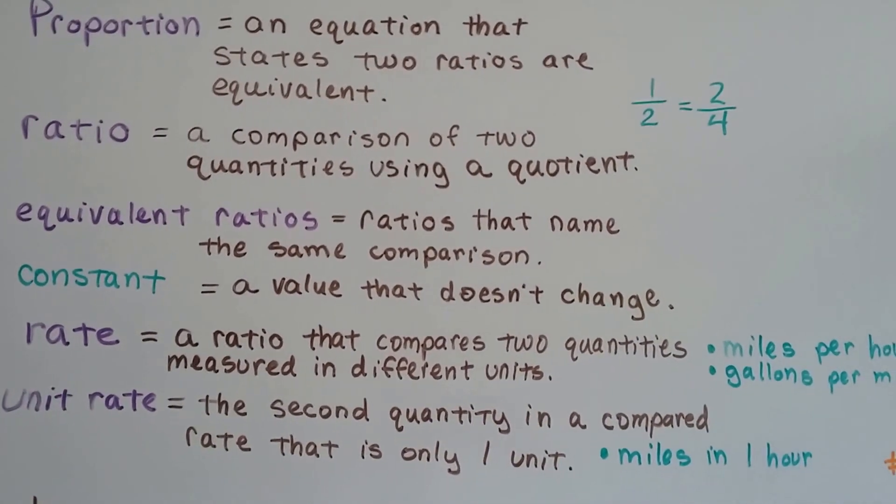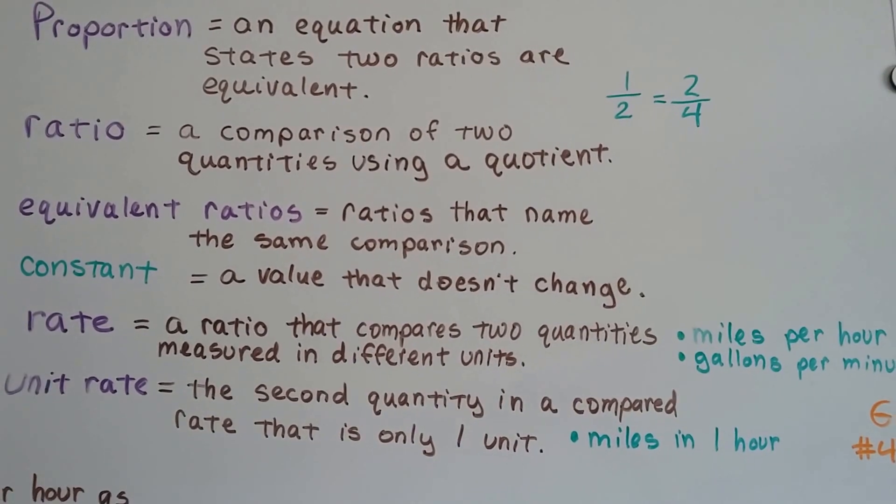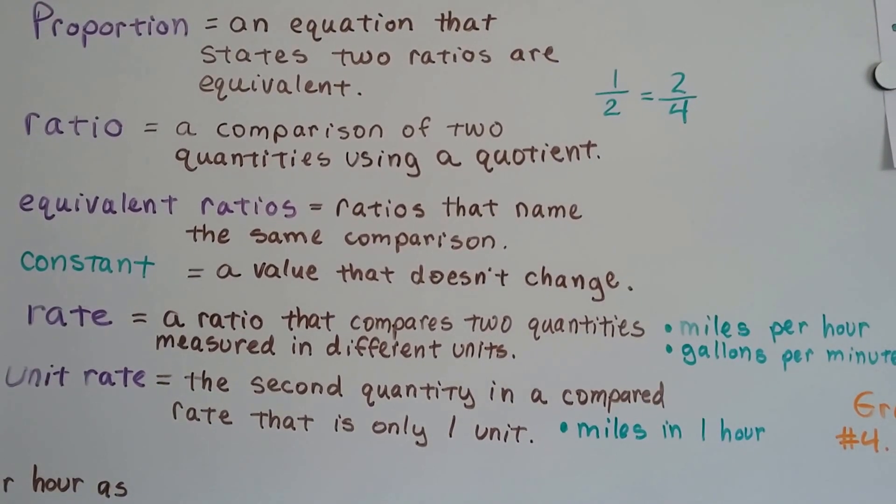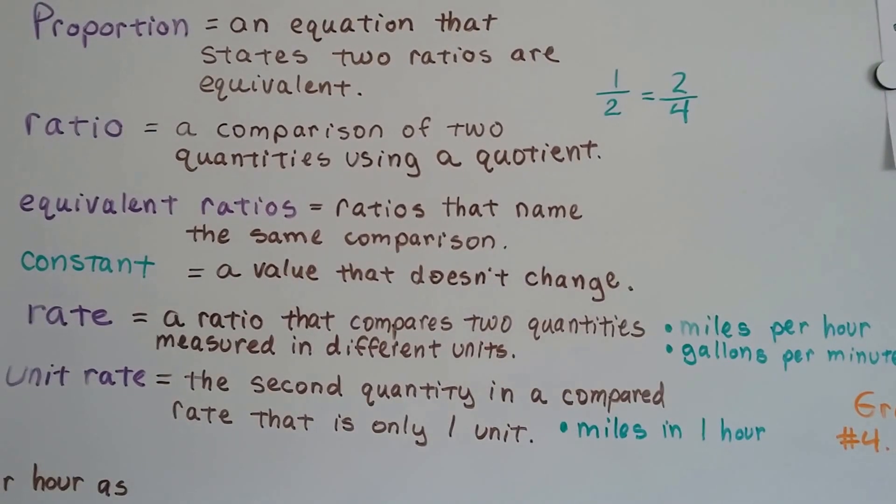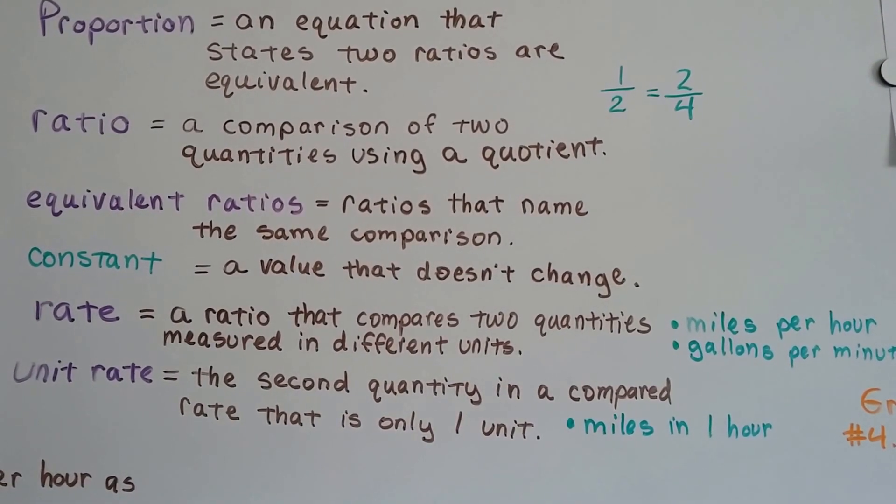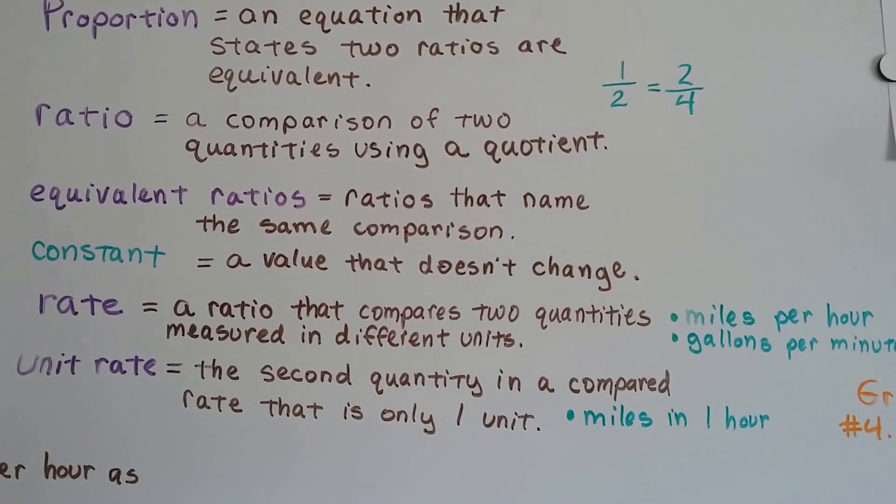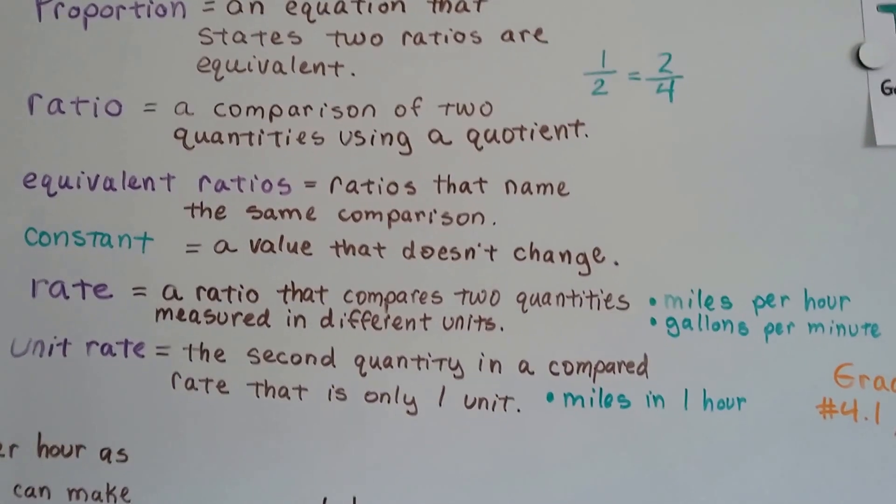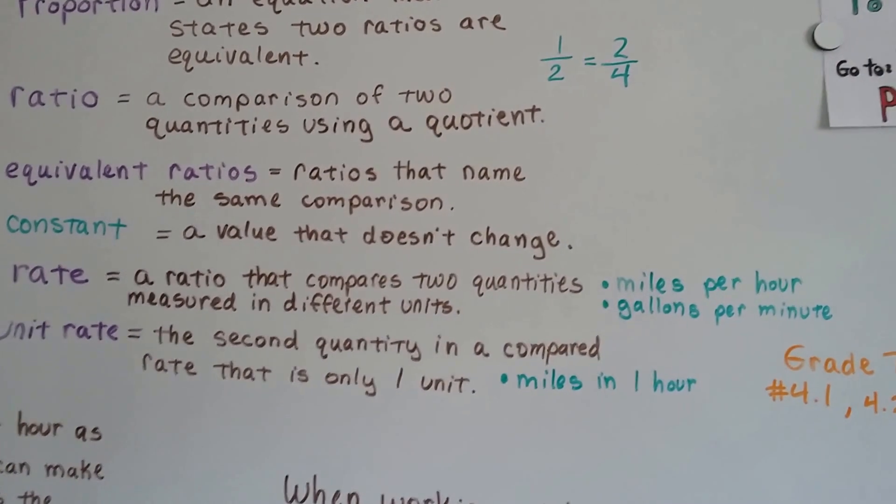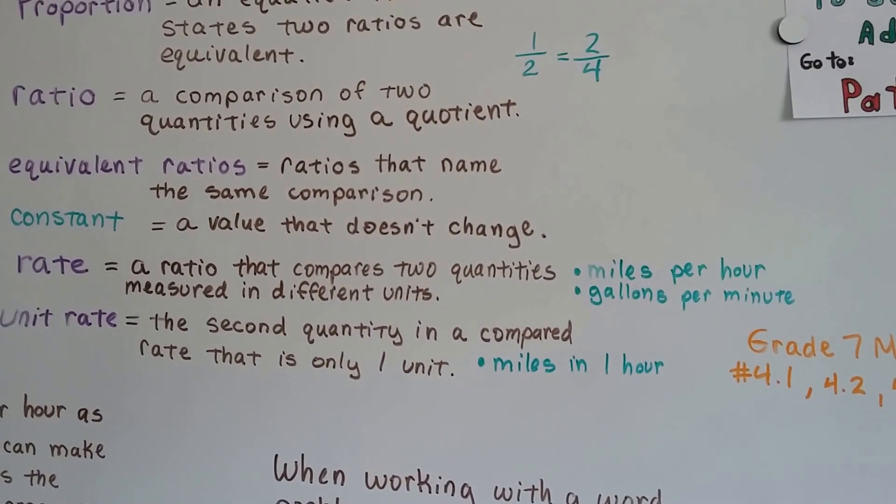A proportion is an equation that states two ratios are equivalent. And a ratio is a comparison of two quantities using a quotient, like one-half equals two-fourths. And there are also equivalent ratios—that half and two-fourths are ratios that name the same comparison. A constant, and that's what we're going to talk about in this unit, is a value that doesn't change. A rate is a ratio that compares two quantities that are measured in different units, like miles per hour or gallons per minute.